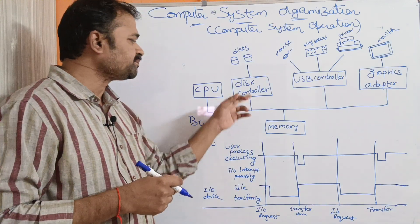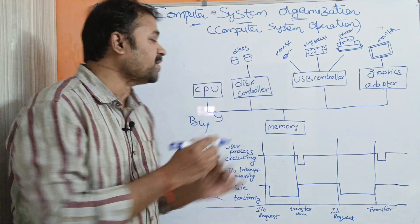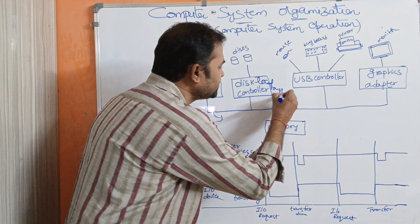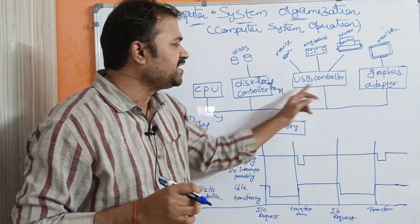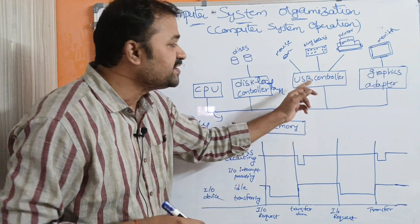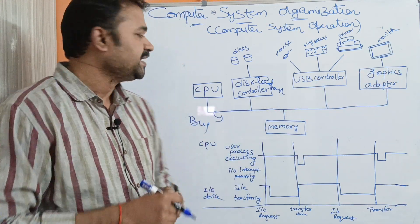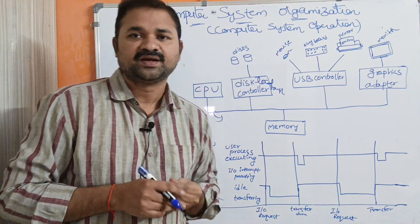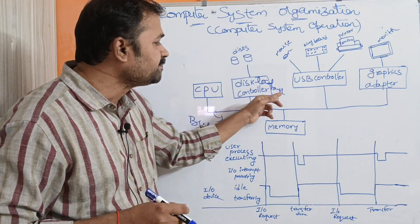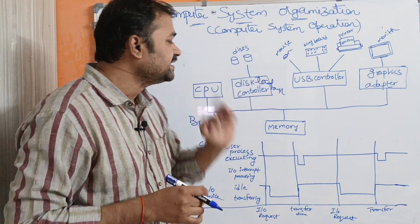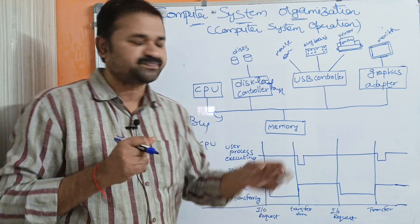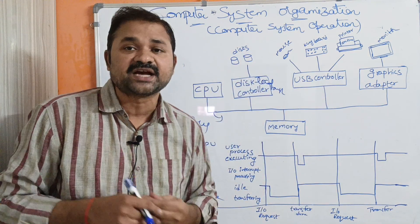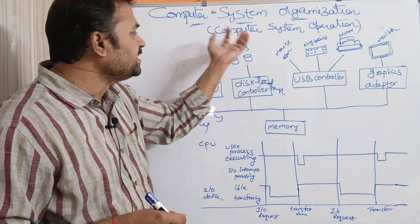Each device controller contains a local buffer. The data will be read from the disk and stored in the local buffer of the disk controller. Likewise, data which resides in the local buffer of the disk controller can be written back to the disk.